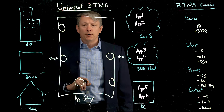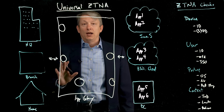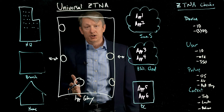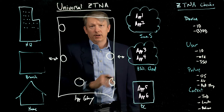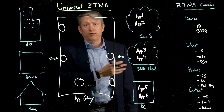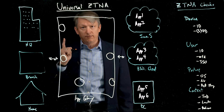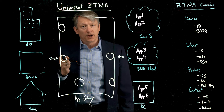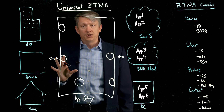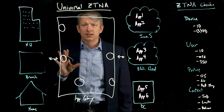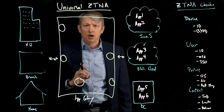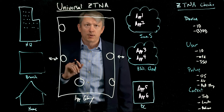With these various enforcement points, it's a distributed network of connections so that no matter where the connection is coming from or where that application is, we have a point where we stay in the flow of traffic. Not only will we verify the user and device upon initial connection, but we're there to continue to apply security, continue to apply those checks, and have the ability to break that connection whenever the user falls out of policy.